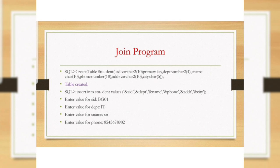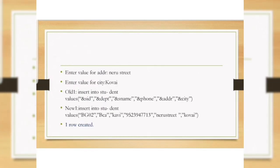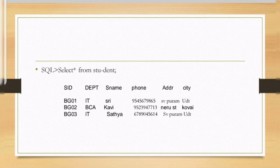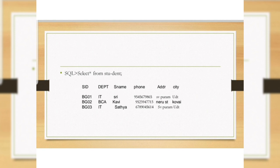Insert into student values: id, department name, phone number, address, city. Enter the values — one row is created. More rows are created. Select star from student — viewing the table.